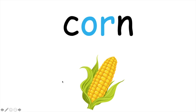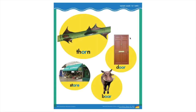Listen as I say the sounds in the word corn and blend them together. All of our spelling words for the week have the OR sound, and the OR sound can be spelled in different ways. If we look at the word thorn, I can see that the letters O and R make the OR sound, so we hear the sound OR in thorn.